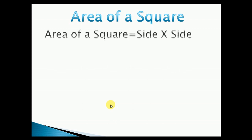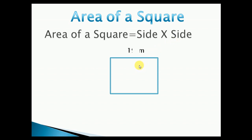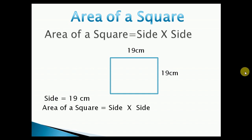Area of a square. Area of a square is equal to side × side. This is a square with one side of 19 cm. To find the area of a square having side 19 cm: area equals 19 × 19, which gives us the area of the square as 361 square centimeters.